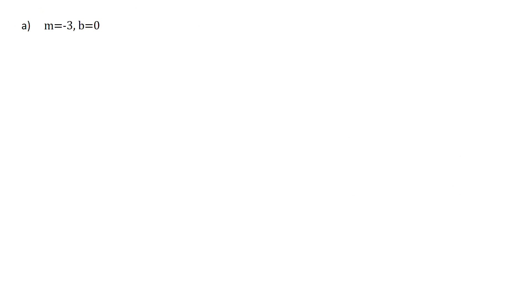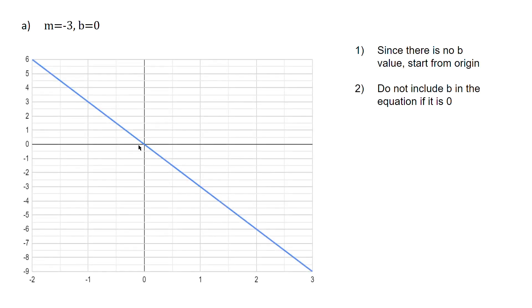For this next graph, the y-intercept goes through the origin because b equals 0. This is direct variation. We have a slope of negative 3 — when it's negative, we know it's decreasing. Negative 3 means that for every unit run, it falls by 3 units. When we write the equation, we do not include b — we don't say y equals negative 3x plus 0, because plus 0 adds nothing. So we write y equals negative 3x.